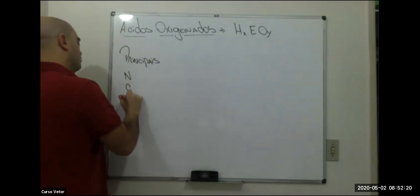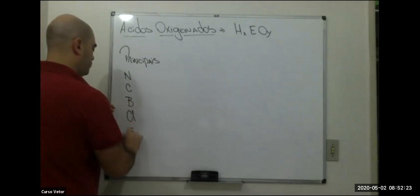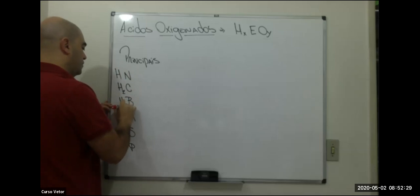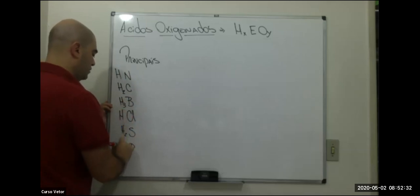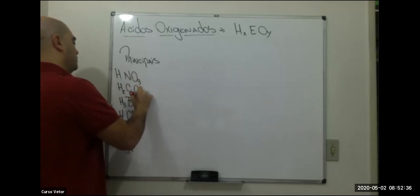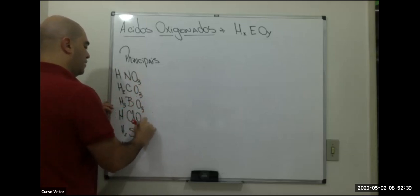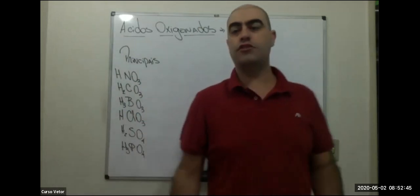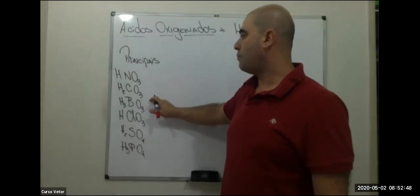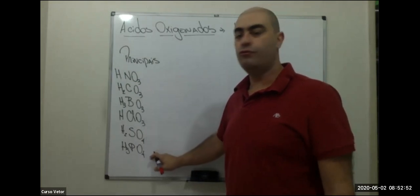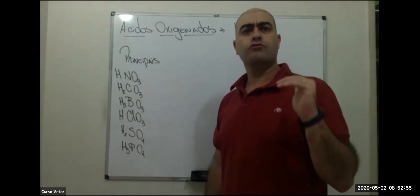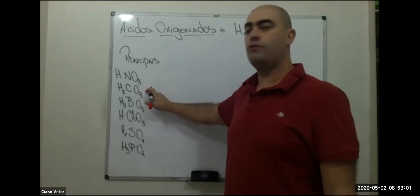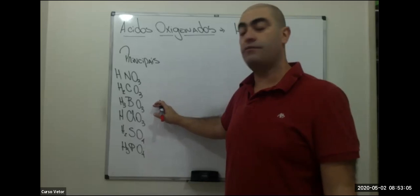Lembrando a frase 'não costumo beber clorofóbio, só pinga': os principais ácidos oxigenados são ácido nítrico, ácido carbônico, ácido bórico, ácido clórico, ácido sulfúrico e ácido fosfórico. Falei dos usos deles: o nítrico serve para fertilizante, o ácido carbônico está nos refrigerantes e bebidas gaseificadas.